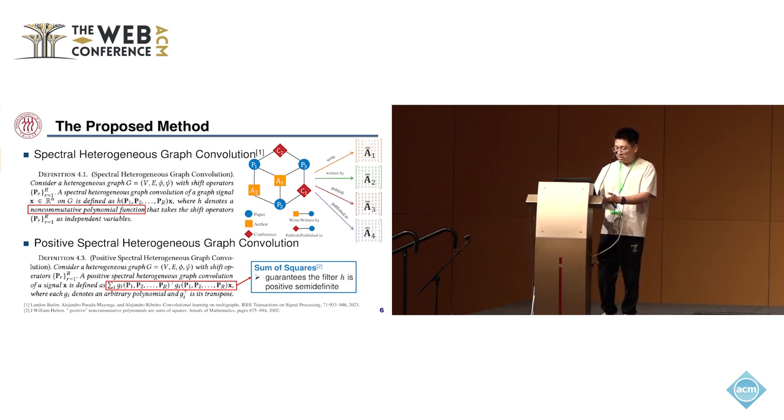So we further propose a positive spectral heterogeneous graph convolution, which uses the sum of squares to define heterogeneous graph convolution. In this form, g_i denotes an arbitrary polynomial, and g_i transpose denotes its transpose.